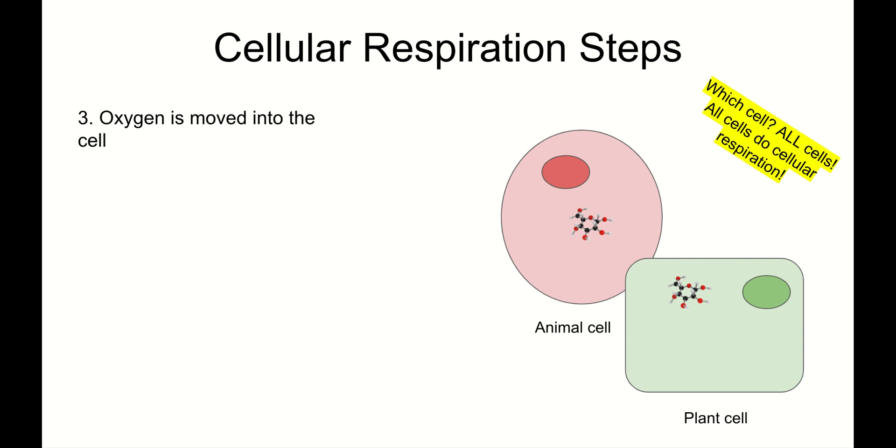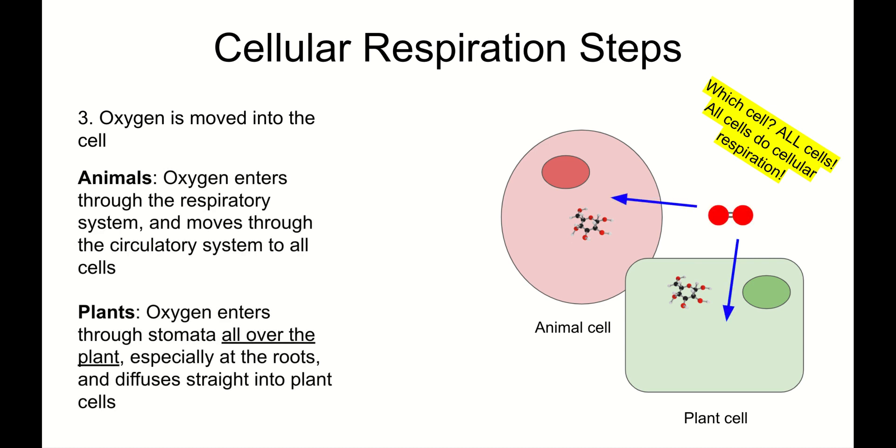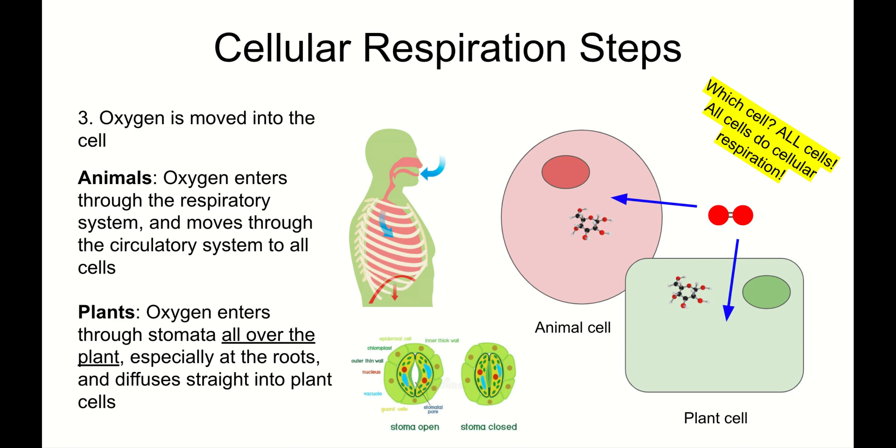Step three: Oxygen is moved into the cell. There it goes. In animals, oxygen enters through the respiratory system. You breathe in and move through the circulatory system, the blood, to all of your cells. In plants, oxygen enters through stomata all over the plant, especially at the roots, and diffuses straight into plant cells. There's not just stomata on leaves. There's also stomata on many other plant structures, including the roots. A lot of oxygen enters plant cells at the roots.